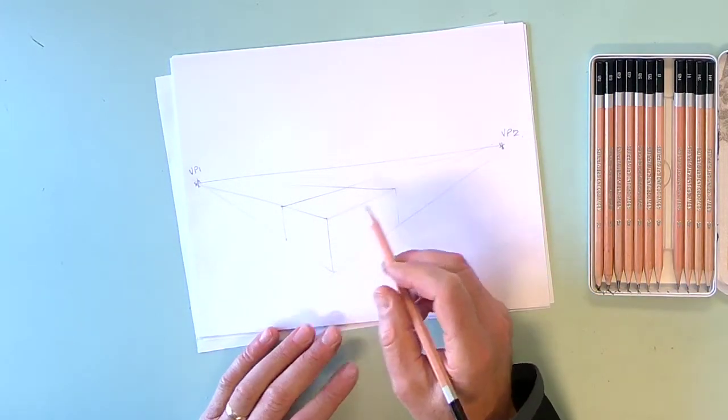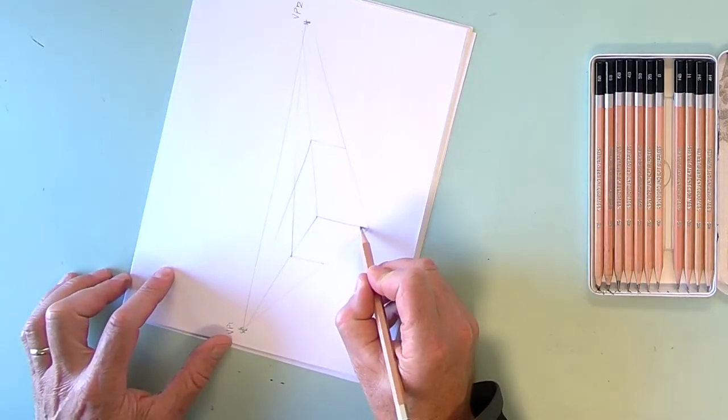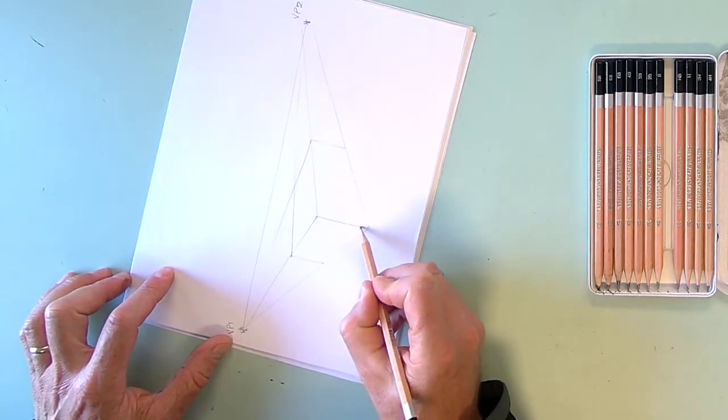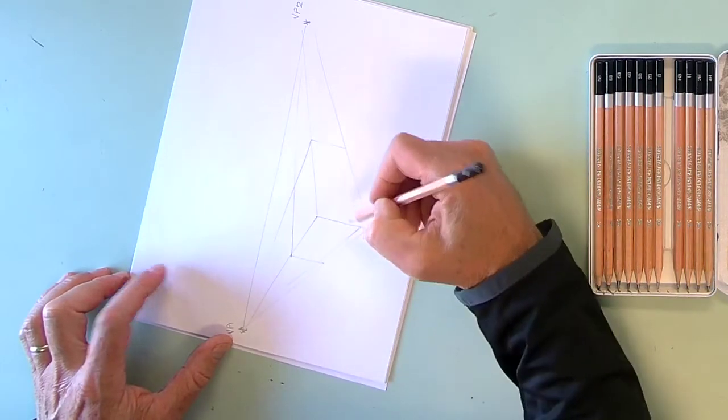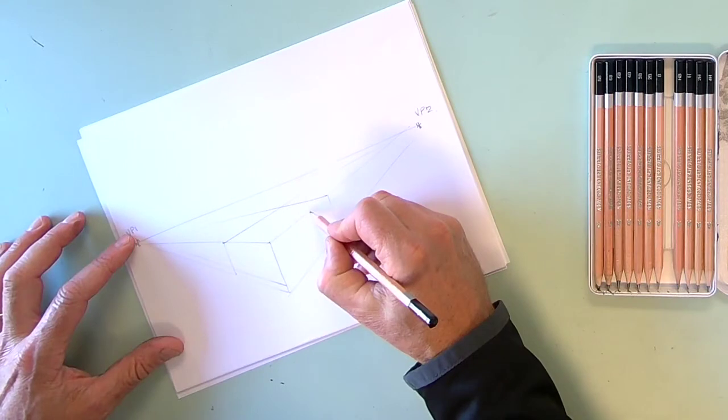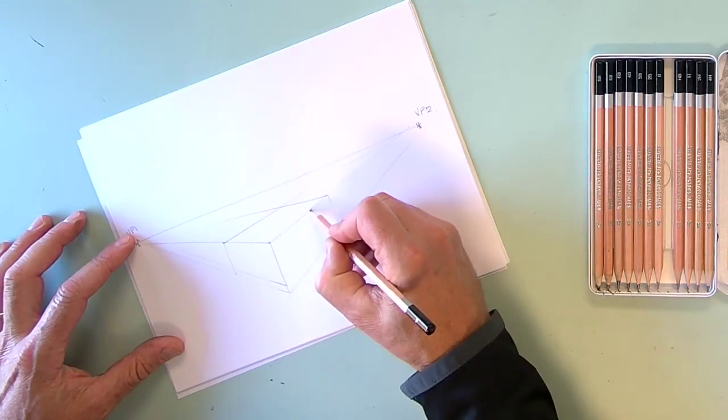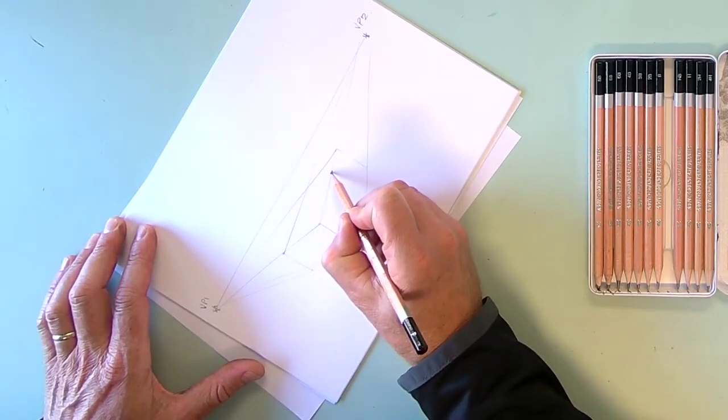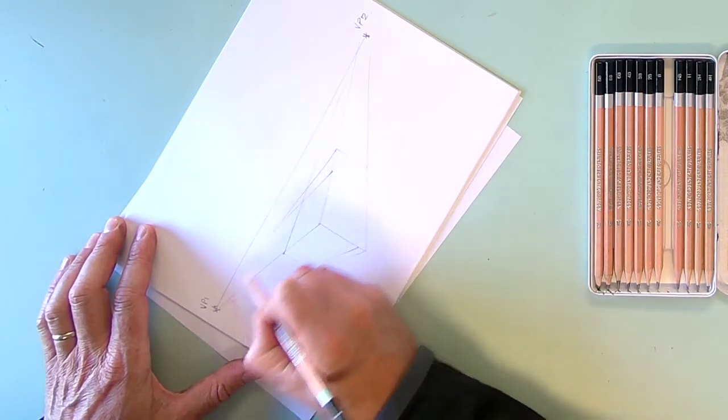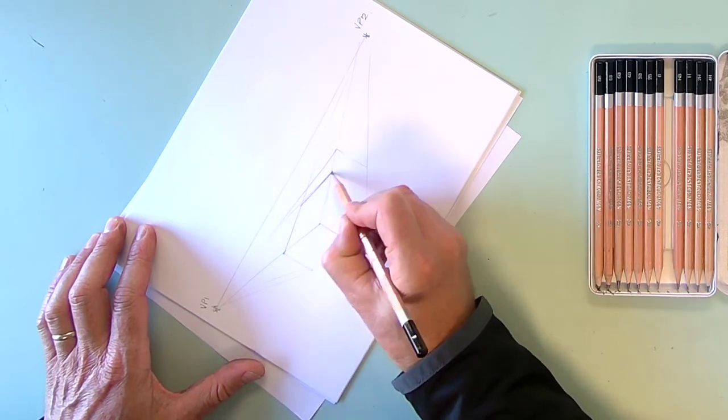So first off I'm going to pick a point like here and I'm going to draw a horizontal line. So I want it to be a big slope, so I want the bottom of the slope to go to here and the top of the slope to be up here. So this point here goes to vanishing point number one. So I've got a line coming across here.